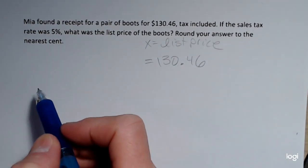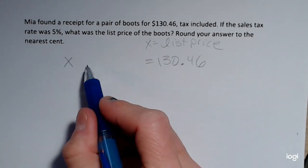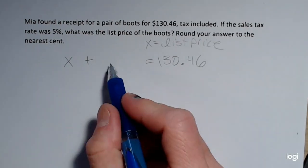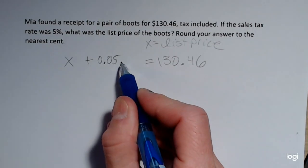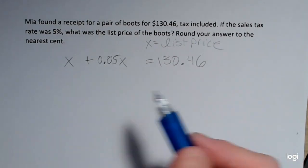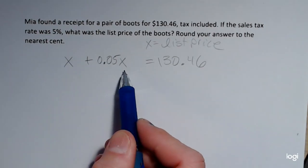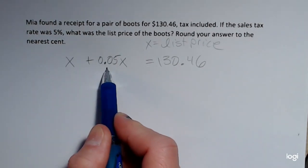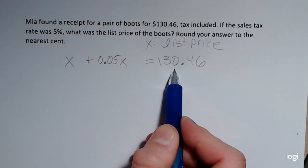I'm going to take the original price, the list price, and I have to add the sales tax. So the sales tax as a decimal is 0.05 and I want to multiply it by the list price. So what this can translate as is the original price plus 5% of the original price is equal to $130.46.